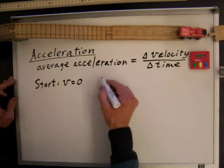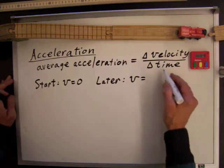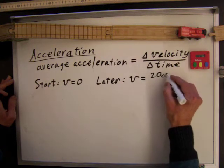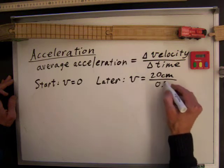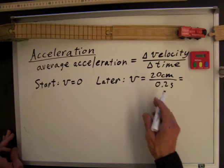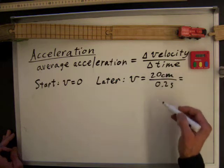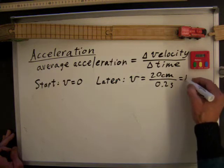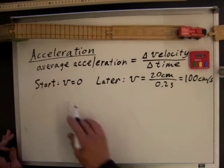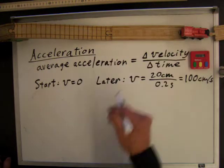And then, later, the velocity was, let's see, it was this distance here, 20 centimeters over 0.2 seconds. What is that? Let's see, 20 centimeters over 0.2 seconds. That would be, divide both by 2, that would be 10 over 0.1. So that would be 100 centimeters per second. So the car, the train starts with a velocity of 0 and it ends with a velocity of 100 centimeters per second.